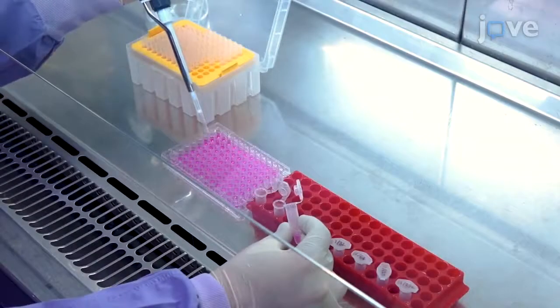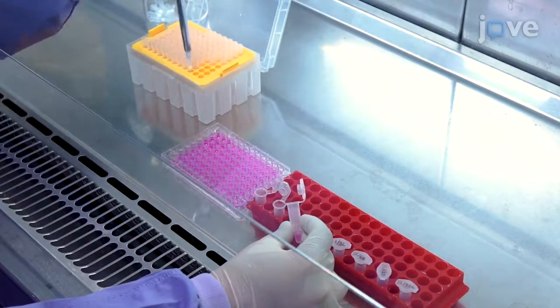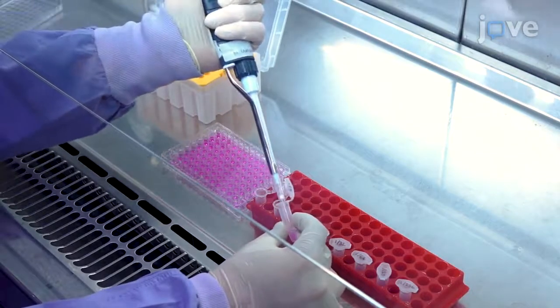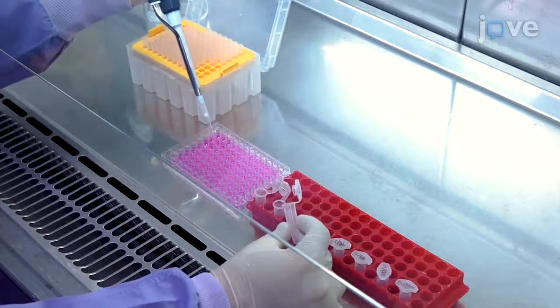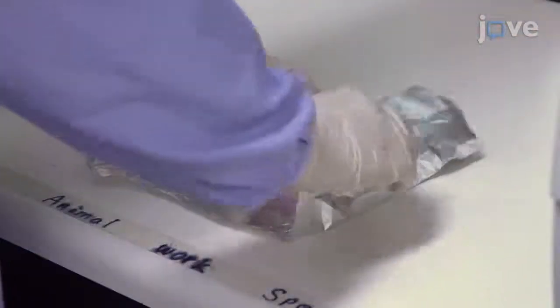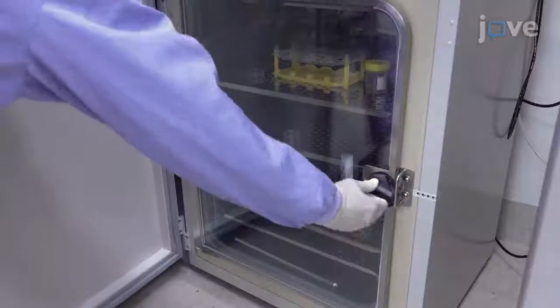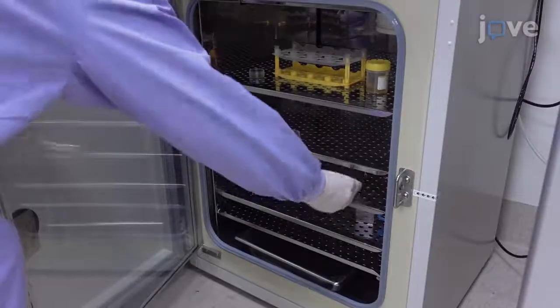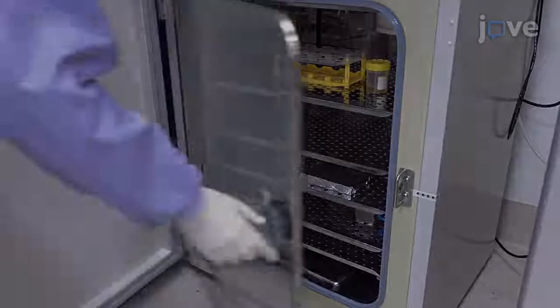After 30 minutes, pipet 100 microliters of the virus serum mixture to each well on the 96 well plate containing 1 times 10 to the 4th cells per well. Then wrap the plate in foil and place in an incubator at 37 degrees Celsius with 5% carbon dioxide overnight for 16 to 24 hours.